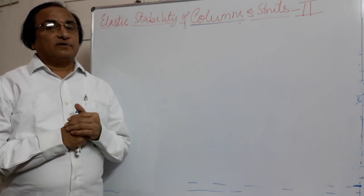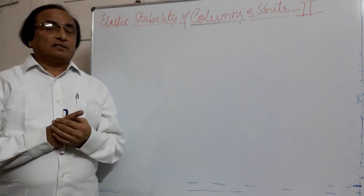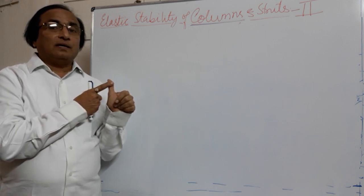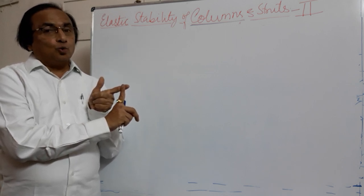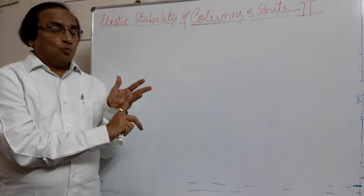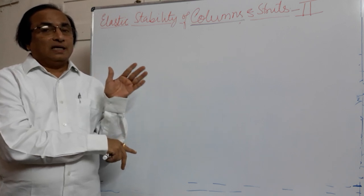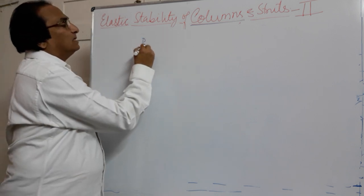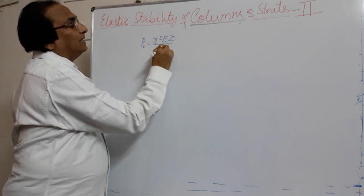Let us repeat what are the different end conditions sequentially and what is the value of the effective length. The first condition is both ends are hinged: L is equal to L. With one end fixed and other end free: L is equal to 2L. Both ends fixed: L will be equal to L by 2. And one end fixed, other end hinged: L will be equal to L by root 2. The formula we are using for Euler's formula is Pc = π²EI divided by L squared, where L is the effective length.